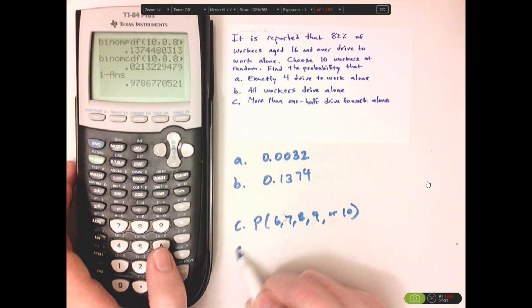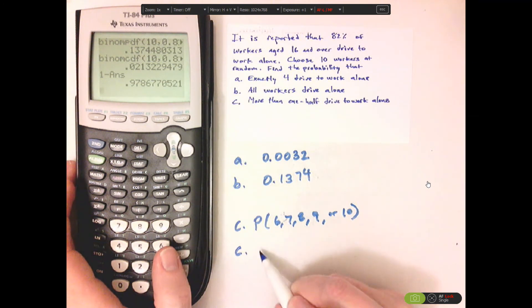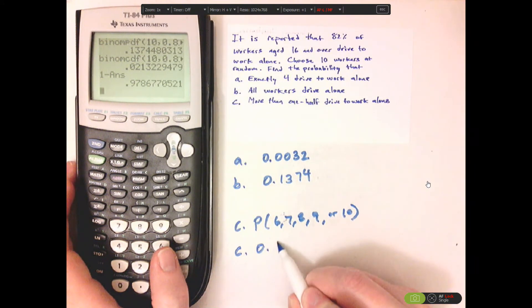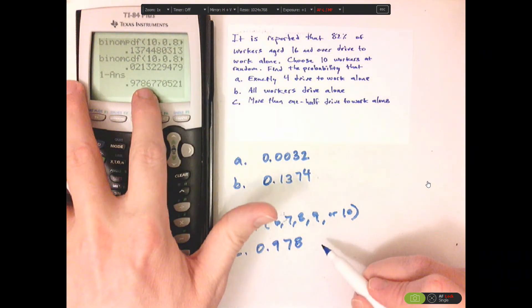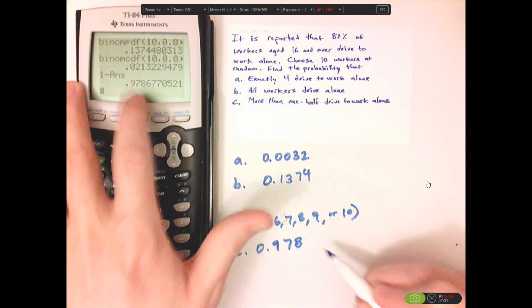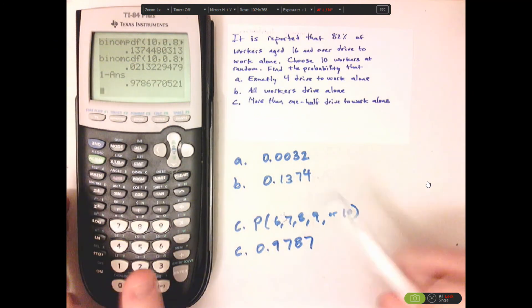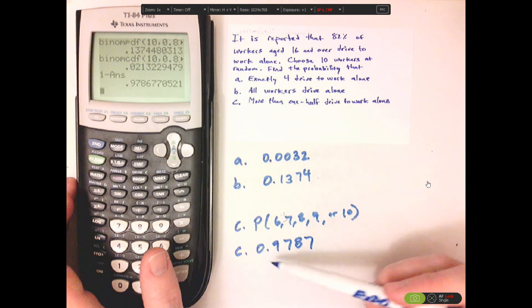And so, letter C would be 0.978. And then that's a 6, but that's a 7, so I'm going to round up to 7. So letter C is 0.9787.